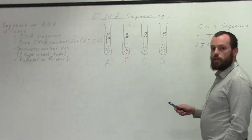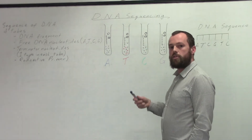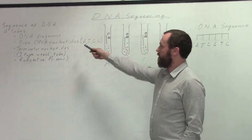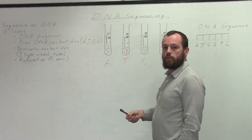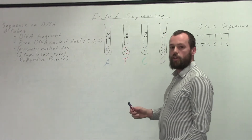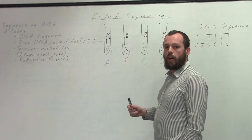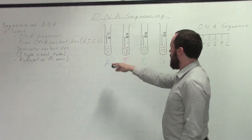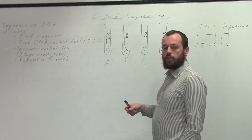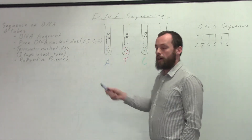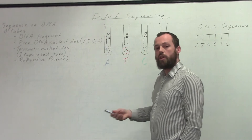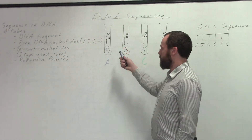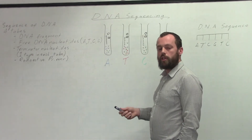Similarly, in the T tube, we will only see a DNA fragment which is two nucleotides long — because a normal A would attach first, and then sooner or later one of the T terminator nucleotides will attach, and that's when no more nucleotides will be able to join. So we'll see fragments of varying lengths in each of these test tubes. It's also true that there will be fragments in there which cover the whole DNA sequence with no terminator nucleotides attaching — but we're not interested in those. We're only interested in fragments of different lengths where the terminator nucleotides are attached.